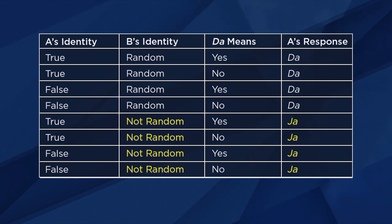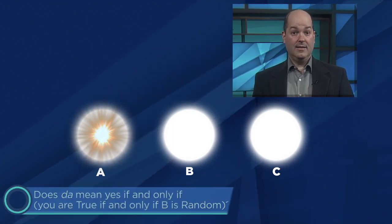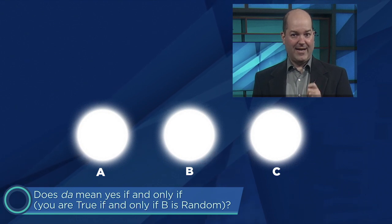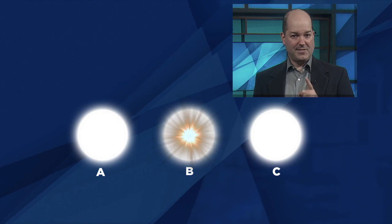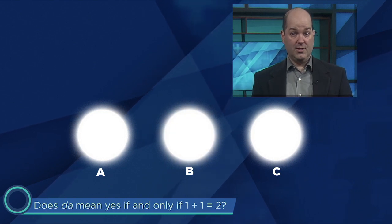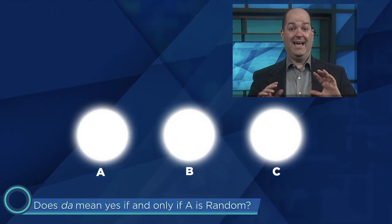And if A is random? Well, we're right back in the scenario considered in our first puzzle. Even if A is random, we won't go wrong by interpreting da to mean that C isn't random, and we won't go wrong interpreting ja to mean that B is not random. So Boolos's solution is to start by asking God A, 'Does da mean yes if and only if you are True if and only if B is random?' The answer definitely identifies one of the gods as not random — let's say B. We then ask B, 'Does da mean yes if and only if one plus one equals two?' This tells us for certain whether B is True or False. And then we ask B, 'Does da mean yes if and only if A is random?' And then we're done.